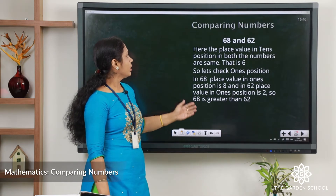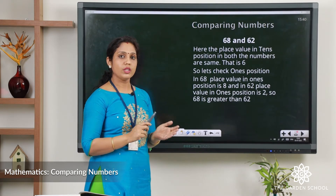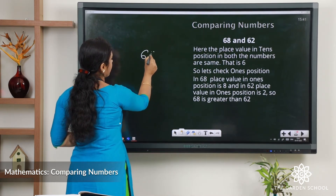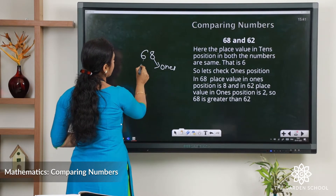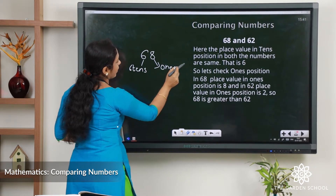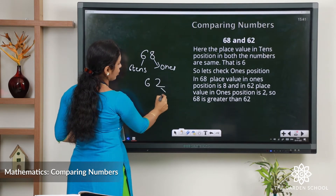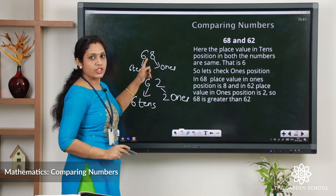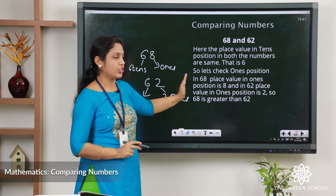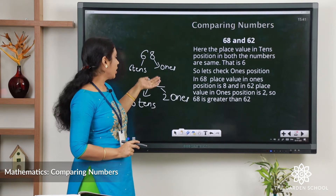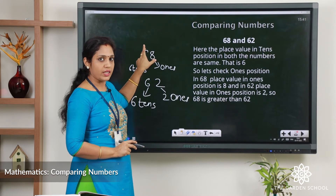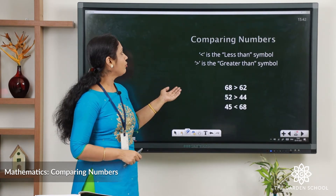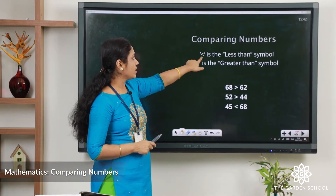Here we have 68 and 62 — both are 2-digit numbers. Let's check the place value. In 68 we have 8 ones and 6 tens. In 62 we have 2 ones and 6 tens. The tens position has the same number, so let's move on to the ones position. In 68 we have 8 ones; in 62 we have 2 ones. 8 is greater, so we can say 68 is greater than 62.